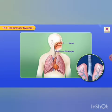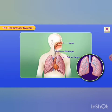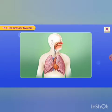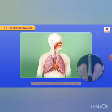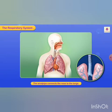The respiratory system consists of the nose, the windpipe, and a pair of lungs. As you breathe in through your nose, air containing oxygen goes in through the windpipe and reaches the lungs. The windpipe connects the nose to the lungs.